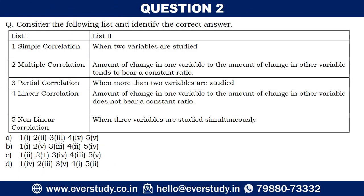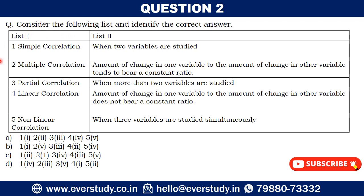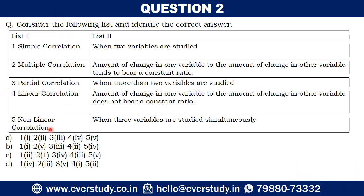Second question: consider the following list and identify the correct answer. You have to match List 1 with List 2. This question is based on types of correlation — simple, multiple, partial, linear, and non-linear correlation. Write down your answer.